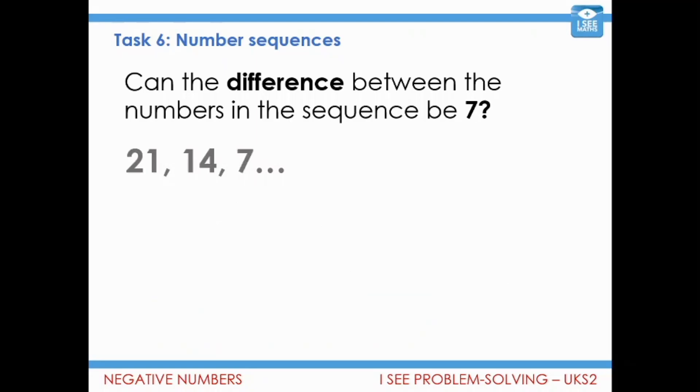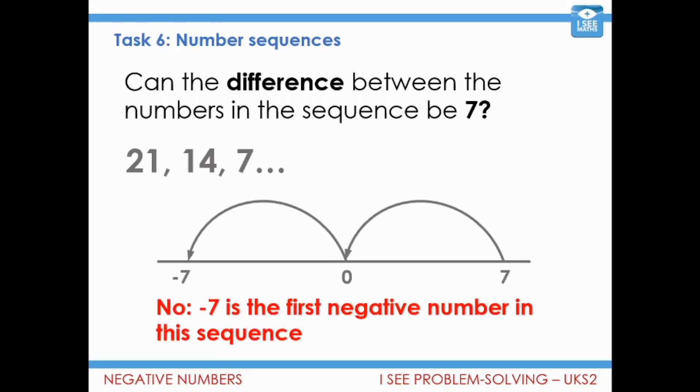Now, can the difference between the numbers in the sequence be seven? Is that possible? Let's have a look. Well, no, not in this case. I go seven and then zero, and then actually my first negative number would be minus seven. So the other examples are different possible sequences that we could have.